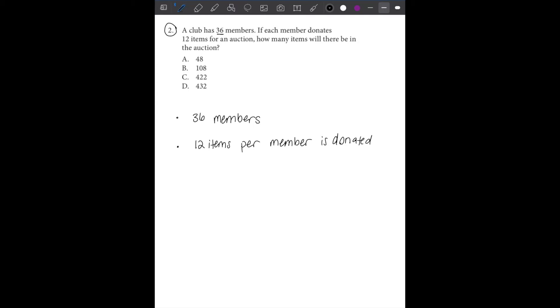How many items will there be in the auction? So this is asking for the total. How many items will there be in the auction? So we have 36 members, there's 12 items per member. We're going to do this multiplication. That's going to be our answer.